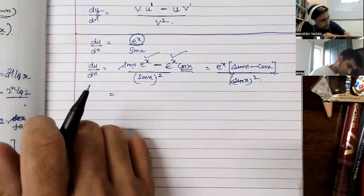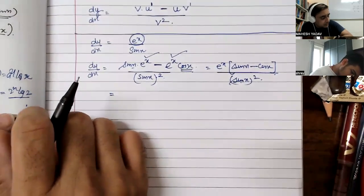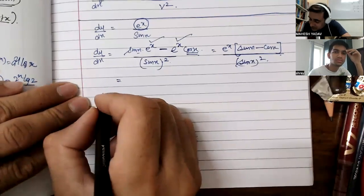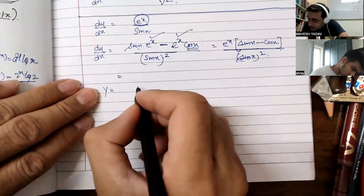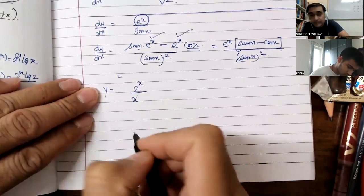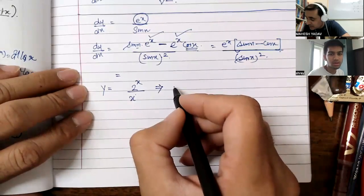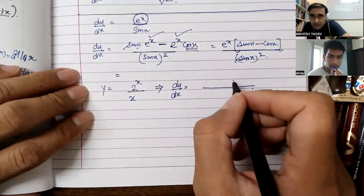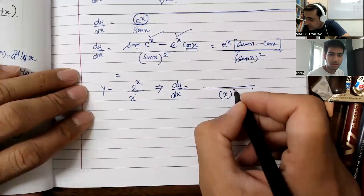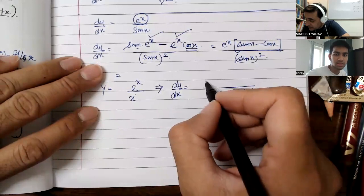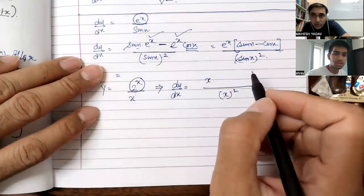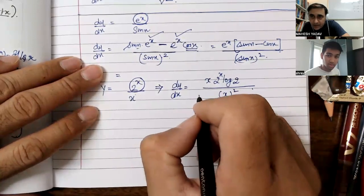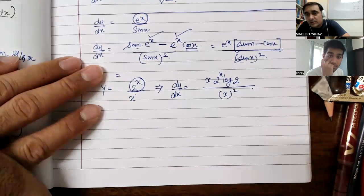Next question: dy by dx of x squared upon x squared. Applying the quotient rule: dy/dx equals denominator whole square. Derivative of 2 to the power x is 2 to the power x log 2. Derivative of 3 to the power x is 3 to the power x log 3.